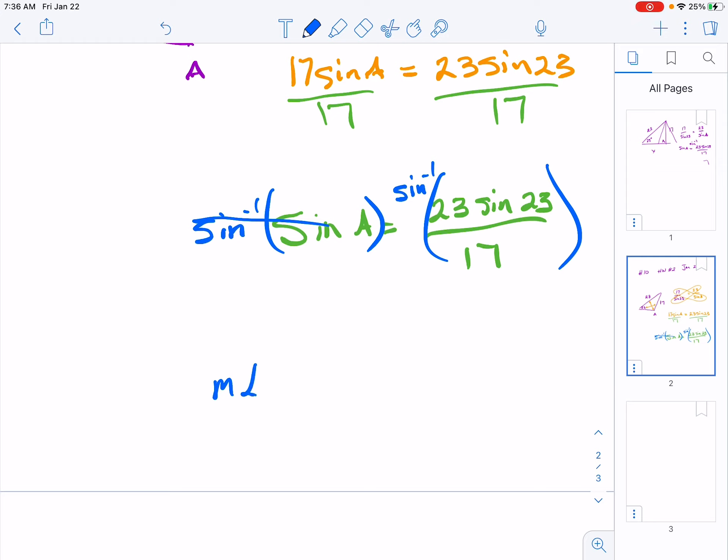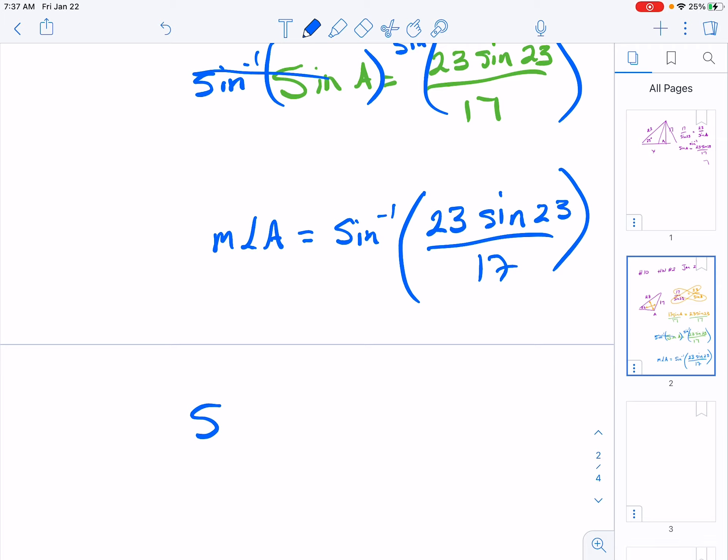So the measure of angle A will equal the sine inverse of 23 sine 23 over 17. And we plug that into our calculator and we get that the measure of angle A is equal to 148.0866...